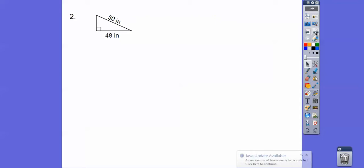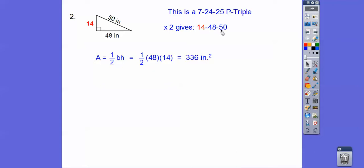This is a Pythagorean triple. This is a 7-24-25 p-triple. If I multiply all of these by 2, we get 14, 48, 50. Here's 48 and 50, so this one has to be 14. Triangles are one-half base times height, and so we get 336 inches squared.